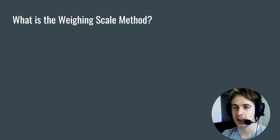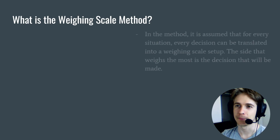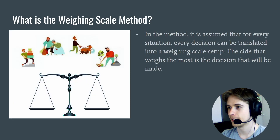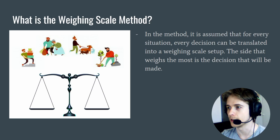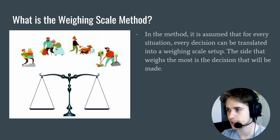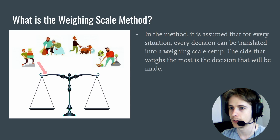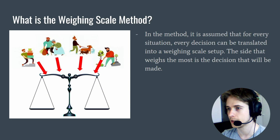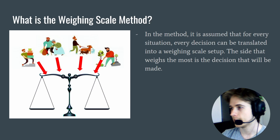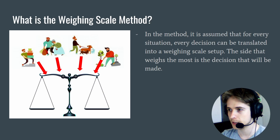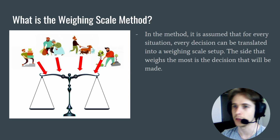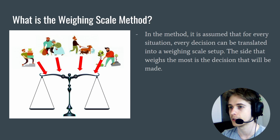What is the weighing scale method then? In the method, it is assumed that for every situation, every decision can be translated into a weighing scale setup — like this. Every situation. And the side that weighs the most is the decision that will be made. And I will show all this very clearly in a second.